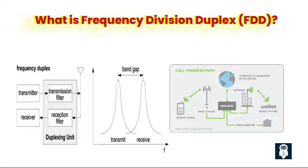To ensure effective separation and minimize interference between the uplink and downlink transmissions, it is crucial to allocate a sufficient frequency distance between the two partial bands. This frequency gap between the uplink and downlink pairs assigned to a specific connection helps maintain clear separation and avoid any overlap. In most cases, a single antenna is employed for both sending and receiving signals. To achieve the necessary directional separation, a duplexing unit is utilized. This unit consists of two narrowband filters characterized by sharp flanks, designed to allow only the desired signals associated with either the uplink or the downlink to pass through, while attenuating or blocking unwanted frequencies.